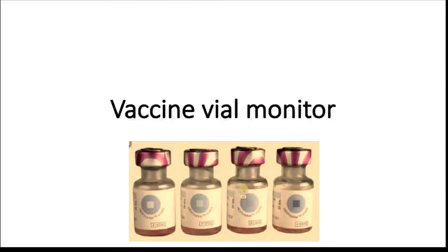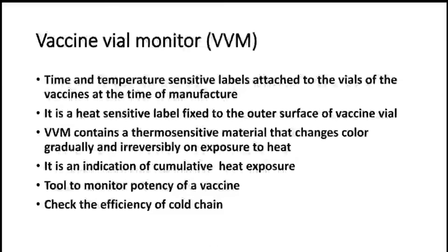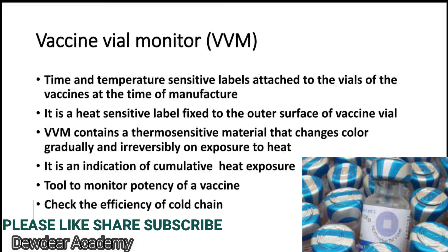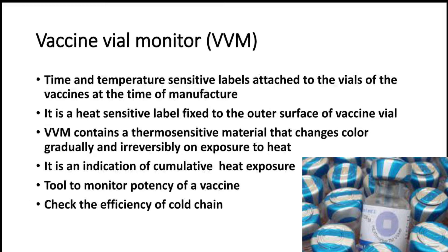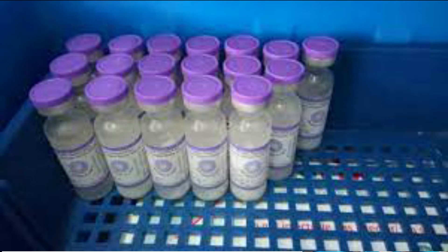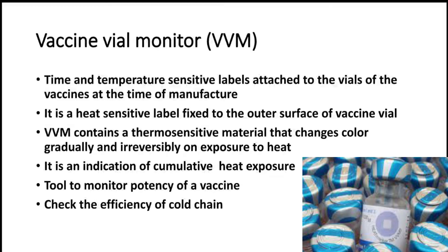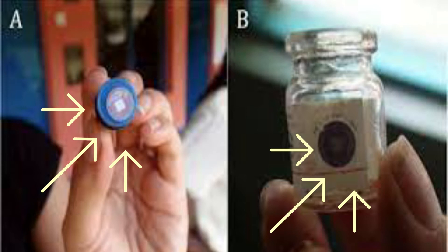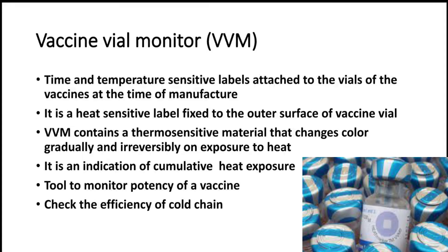Welcome to the channel Beauty Academy. Today the video is regarding the topic: Vaccine Vial Monitor. A vaccine vial monitor is a time and temperature sensitive label attached to the vials of vaccines at the time of manufacture. It is a heat sensitive label fixed to the outer surface of the vaccine vial, and it contains a thermosensitive material that changes color gradually and irreversibly on exposure to heat. It is an indication of cumulative heat exposure and a tool to monitor the potency of a vaccine.